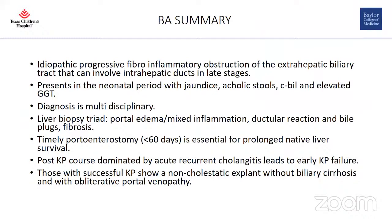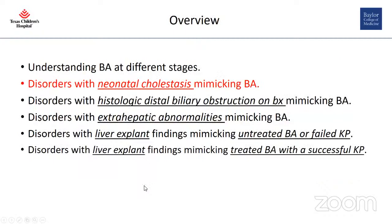To summarize BA: it is a progressive fibroinflammatory obstruction of the extrahepatic biliary tract involving intrahepatic ducts in late stages, presenting in the neonatal period with jaundice, acholic stools, elevated conjugated bilirubin, and elevated GGT. Diagnosis is multidisciplinary. Liver biopsy shows a triad of portal edema, mixed inflammation, ductular reaction, bile plugs, and fibrosis depending on age. Timely portoenterostomy is essential for prolonged native liver survival. Post-KP recurrent acute cholangitis leads to early portoenterostomy failure. Successful portoenterostomy results in a non-cholestatic explant without biliary cirrhosis but with obliterative portal venopathy.